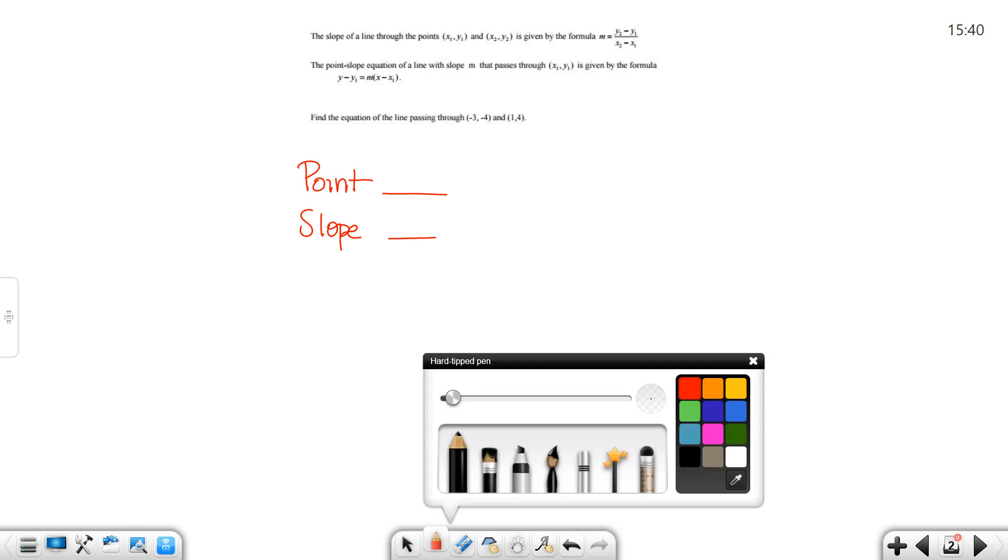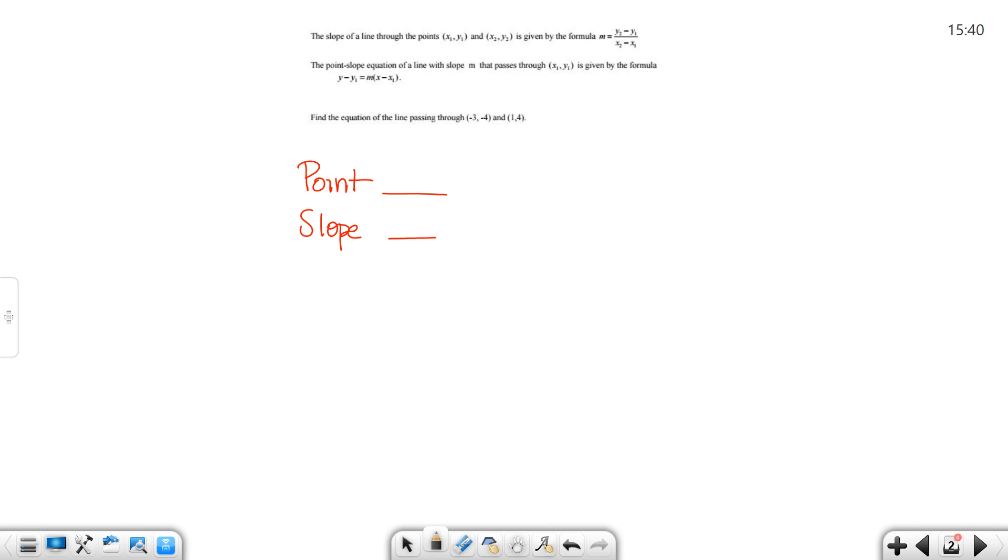What you'll notice about this particular problem is it has two different points. So, since it has two different points, you can pick either point. It does not matter which point you pick. I'm just going to pick the first one. Now, if you use the other point, (1, 4), you'd still get the same answer. Now, I also don't have a slope. So, what you'll notice about the slope is I've given you the formula for the slope at the top of the page.